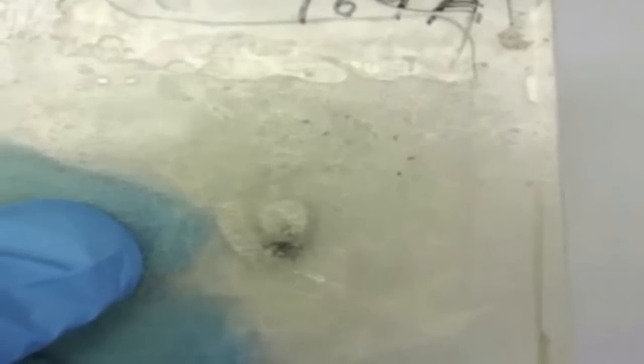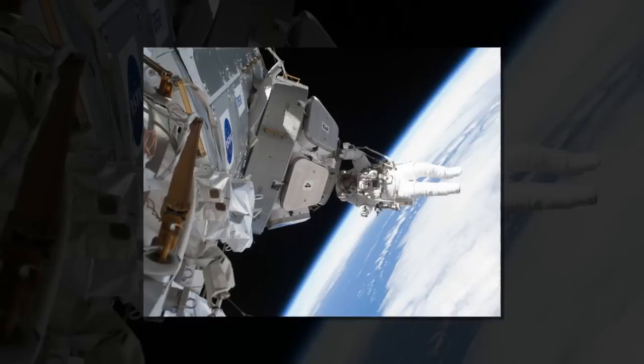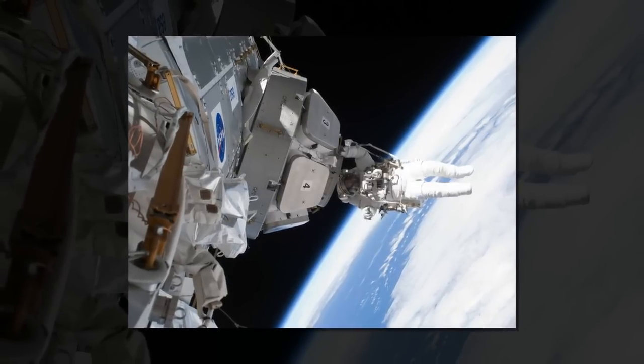A NASA-sponsored research produced a liquid compound that hardens in a matter of seconds after contacting air. It can be used to create self-sealing walls on aircraft, making punctures a less threatening threat in space.